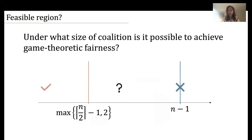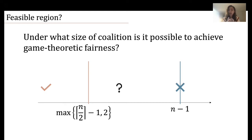This is evidence that we can achieve game theoretic fairness for some meaningful parameter region. This straw man idea generalizes to any number of players, as long as the coalition is of size at most two. On the achievability side, for a coalition of size less than half we can achieve strong fairness, and for coalition size smaller than two we can use the straw man solution. On the impossibility side, Chen et al. showed it is impossible to achieve game theoretic fairness against an n-minus-one-sized coalition. So we ask: exactly where should we draw the line, the boundary between feasibility and infeasibility?